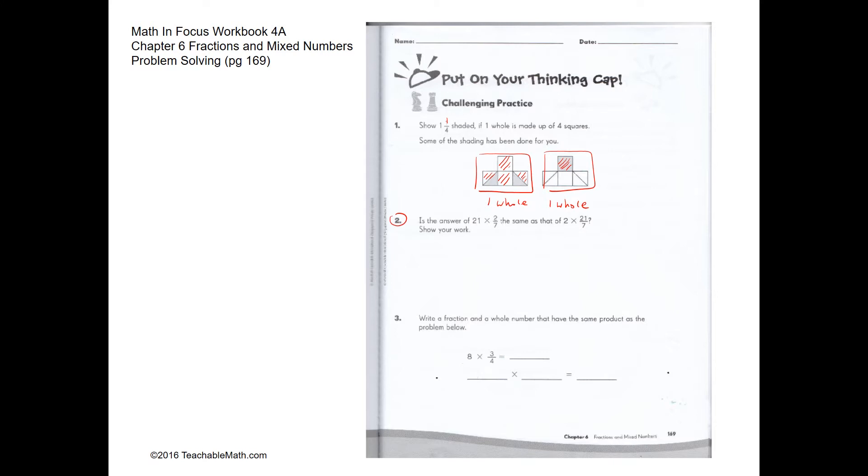Question 2. Is the answer of 21 times 2 sevenths the same as 2 times 21 sevenths? Yes it is. 21 times 2 sevenths is 6, and 2 times 21 sevenths is also 6.